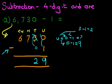The hundreds, 7 minus nothing, that remains 7. And the thousands is the same. 6 minus nothing is 6.